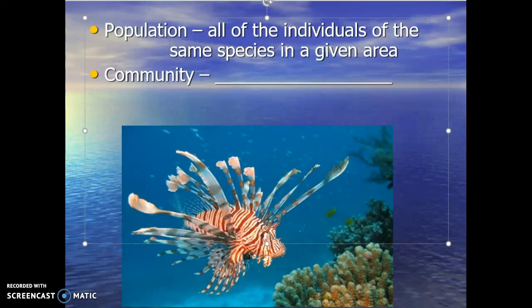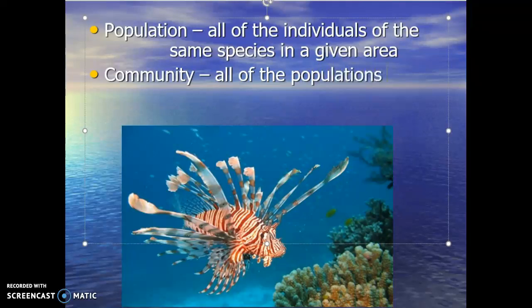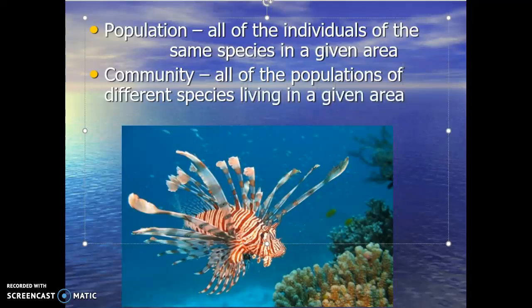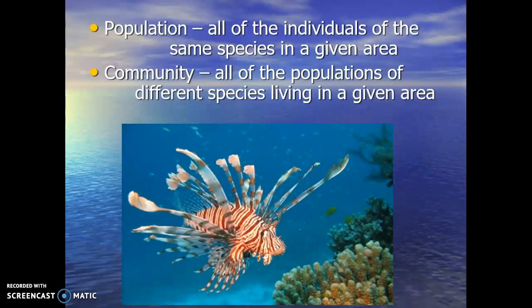So we're going to focus on lionfish. What's the population of lionfish? How many are there? How many males, how many females, how many adults? As we expand our study, we then look at the community — all the populations of different species living in a given area. How do all these different species interact? How are the lionfish interacting with the corals, the damselfish, the sea turtles, the sponges? How do all these different things connect within the marine ecosystem?